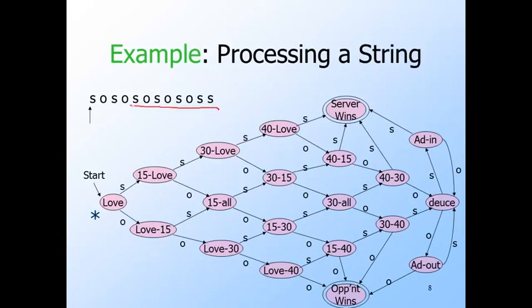Here is our input string. It represents a game in which the server and opponent alternate winning points until the very end, when the server wins two in a row. We'll mark the current state by the star. And initially, the current state is the start state. That's where all finite automata start out. The arrow indicates which input we are about to process. So here we are about to process the first event where the server wins the first point.